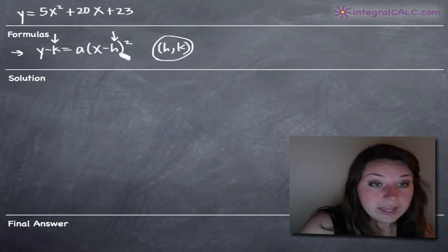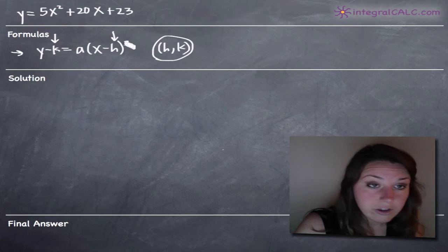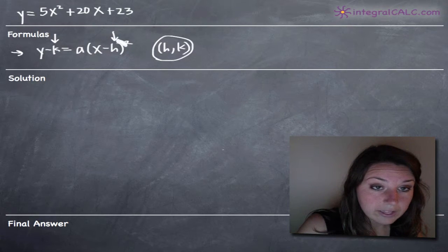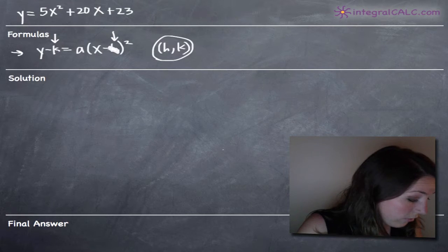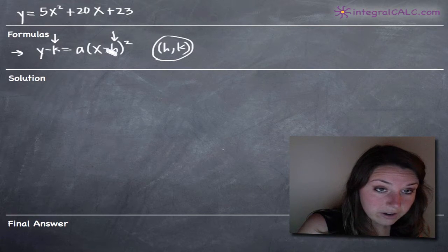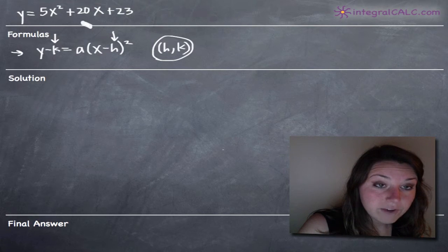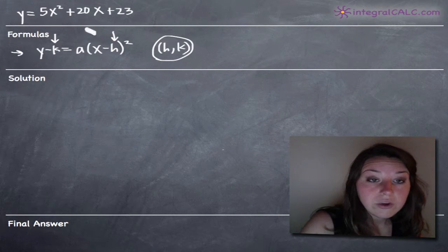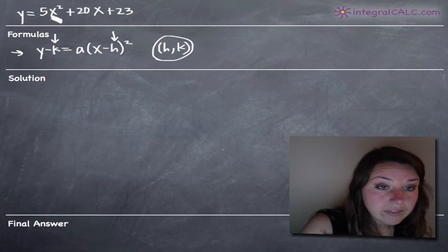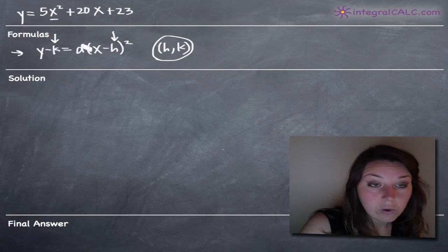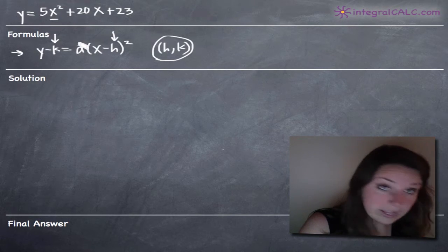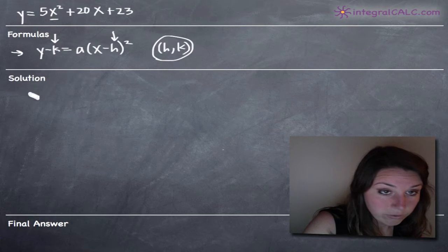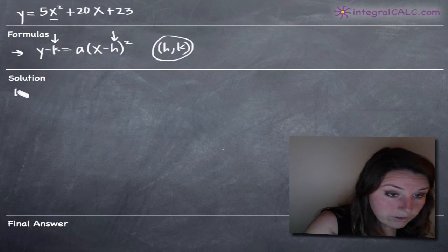So the first step in converting our equation into this function here is to divide every term by 5 because we need to get this x squared term to have a coefficient of 1. And the only way to do that is to divide everything through by 5.